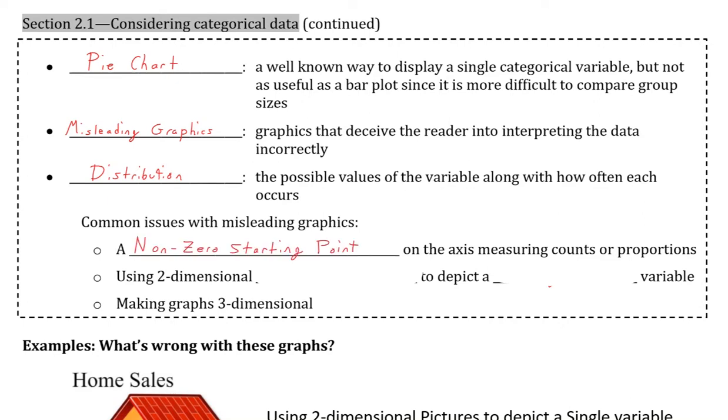A non-zero starting point on the axis measuring counts or proportions. This really comes into play with graphics such as bar plots since we analyze those by comparing the lengths or heights of the bars. If part of the bar is hidden or not shown, then it is hard to adequately compare them.